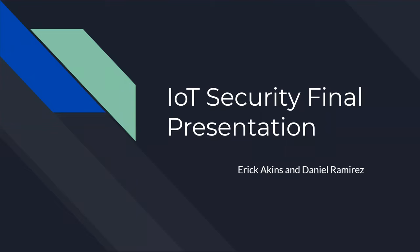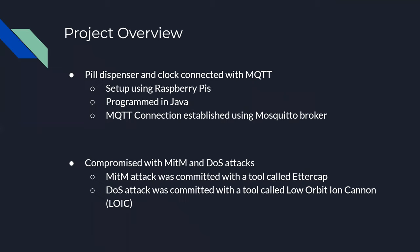Hello, my name is Daniel Ramirez and my name is Eric Akins, and this is our final presentation for IoT security. Our project was a pill dispenser connected to an alarm clock with an MQTT protocol. This was primarily set up using Raspberry Pis. The coding language we elected to use was Java, because that was the language with which we had the most experience, and the MQTT broker we chose was Mosquitto.